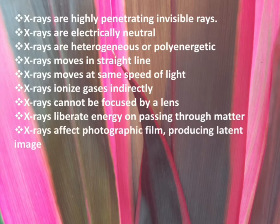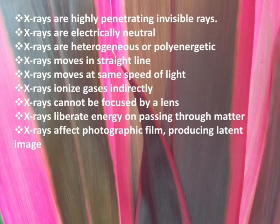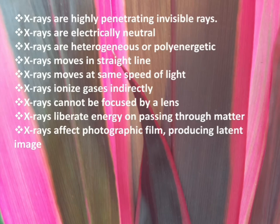X-rays affect photographic film producing a latent image. This is the principle we use in radiographic procedures — X-rays penetrate the human body and reach a photographic film, where an image of the patient's internal structure is displayed. A latent image is an image we cannot see with our naked eyes; we have to process it to get the final image. In earlier days, films inside a cassette were developed to produce images.